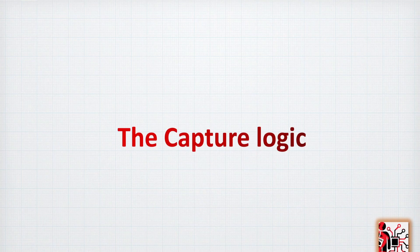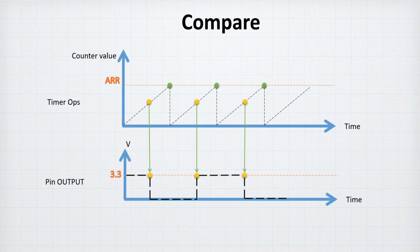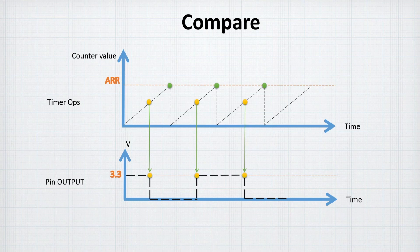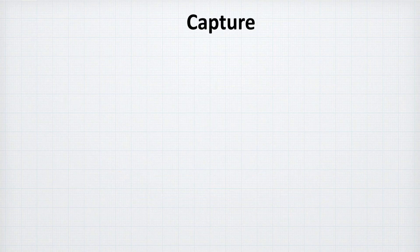Let's start understanding the capture logic. There is nothing better than starting with the compare to see the difference. In the compare setup, we have the timer set up and we set a position in the compare capture register. Each time we reach that value, we have a change in the polarity of our pin. This is the main purpose of the compare — it generates an output from the microcontroller itself.